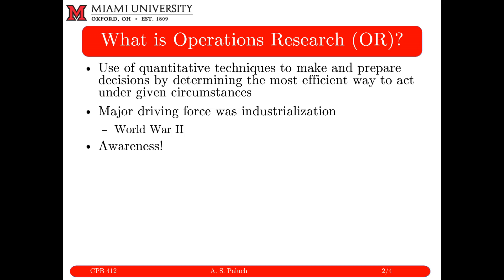A major driving force for the development of operations research has been industrialization. In an industrial setting, I'm constrained by some finite number of resources, and perhaps my goal is to make as much money as possible — to maximize my profits. So given I want to make these three products, I know the net profit of each product, and I have three machines — what's the most efficient way to operate those machines so that I make as much money as possible?